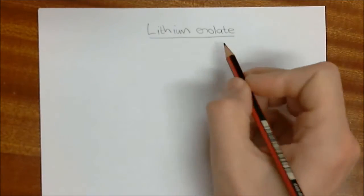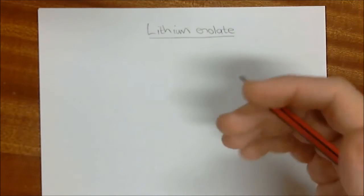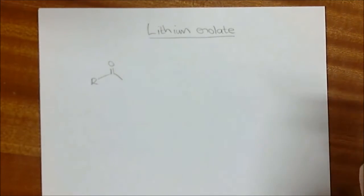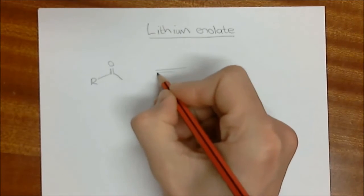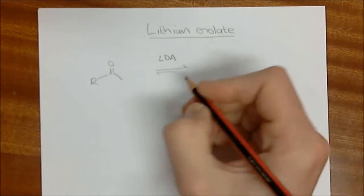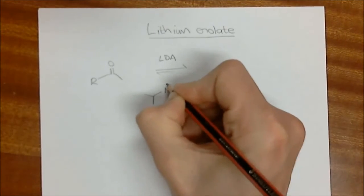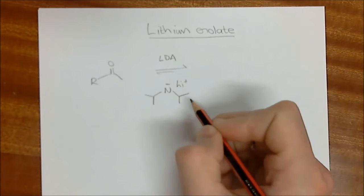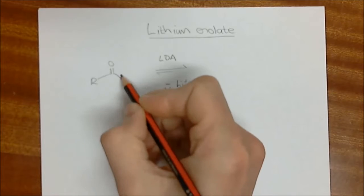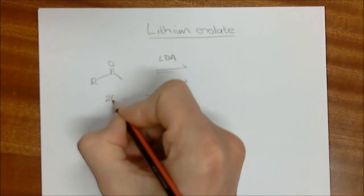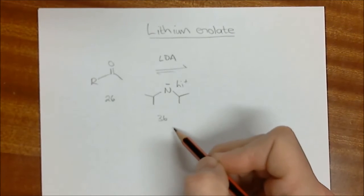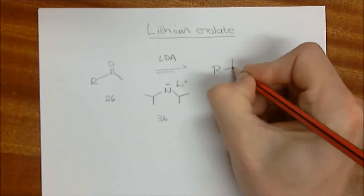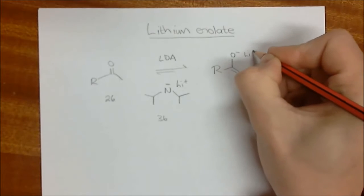We're going to start with the lithium enolate, which is just the enolate with a counter-ion of lithium. They become popular because of the particular base that we use to form the enolate. So let's start with a very simple ketone, some generic ketone, and the base that we're going to be using is LDA. And by now, hopefully, you know that LDA is lithium diisopropyl amide. This is a very strong base. Diisopropyl amide has a pKa of about 36, and we know that this pKa is between 25 and 26.